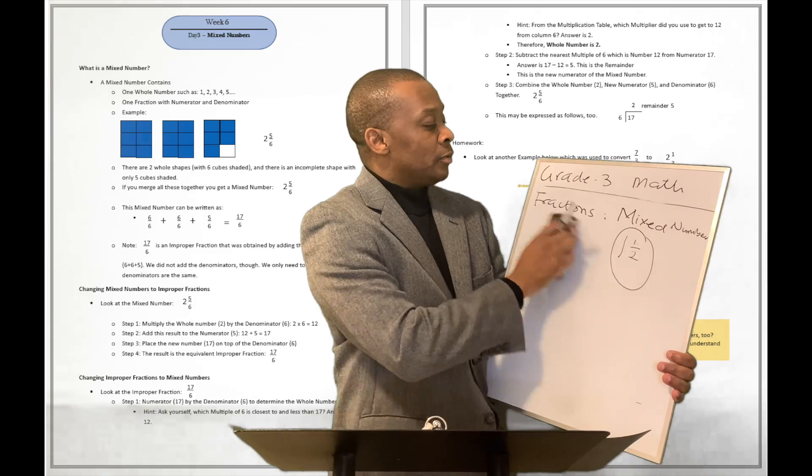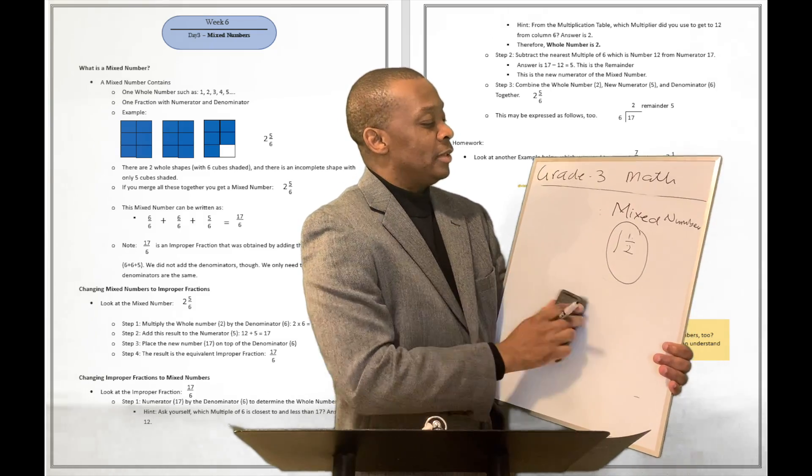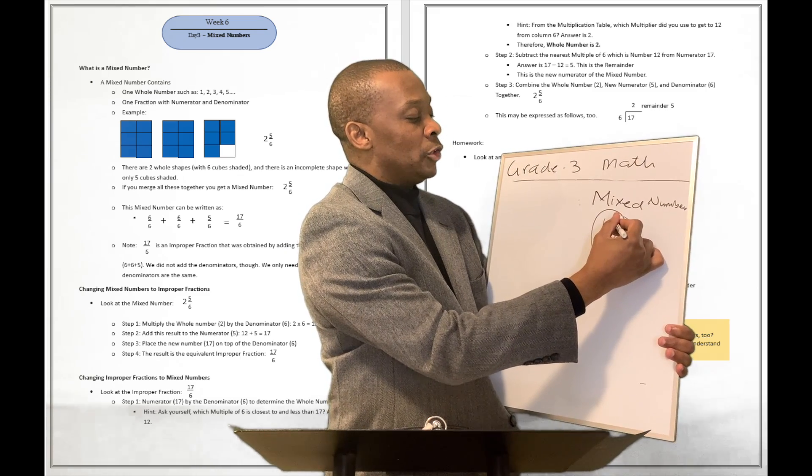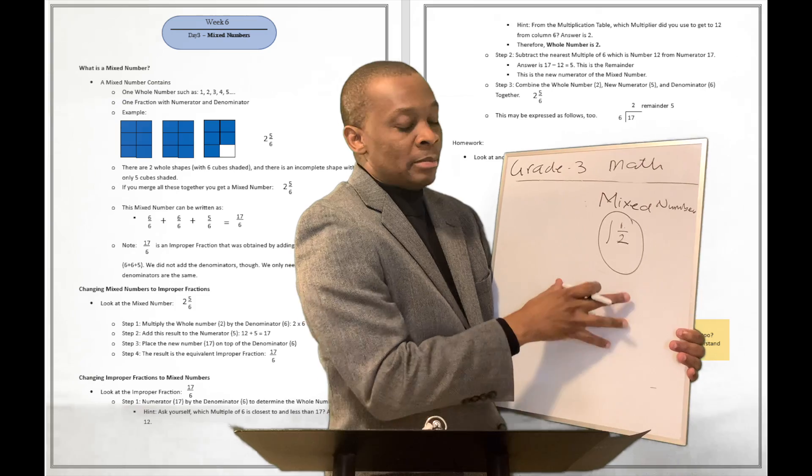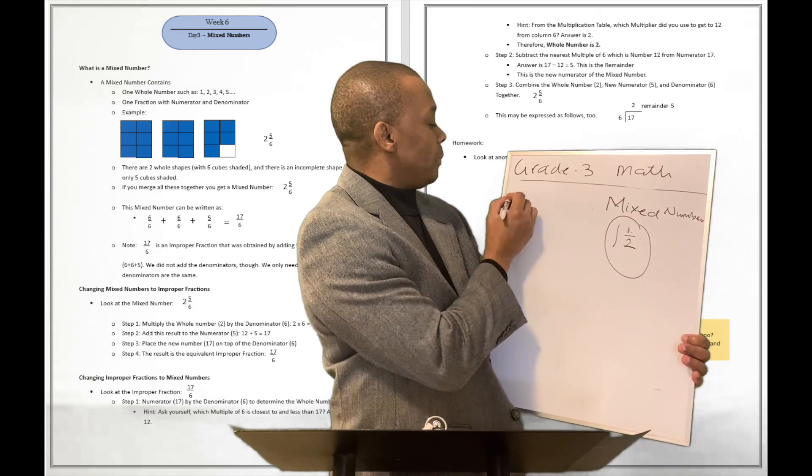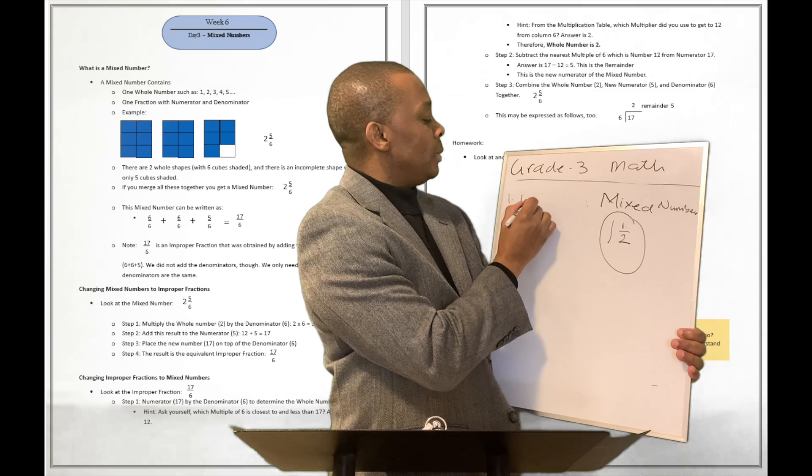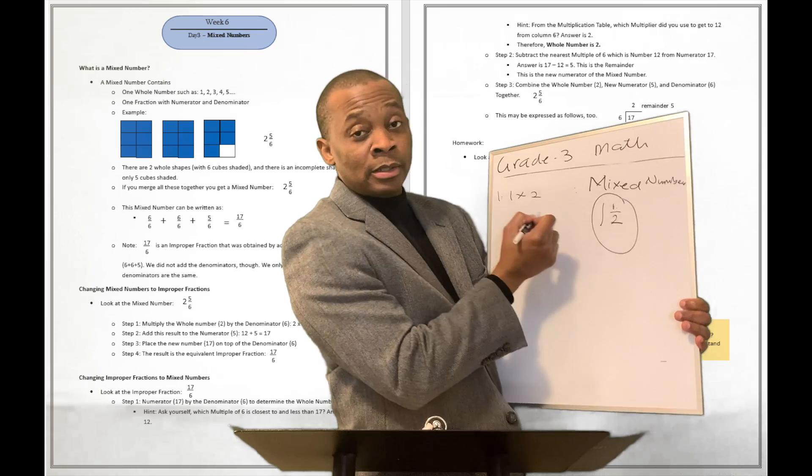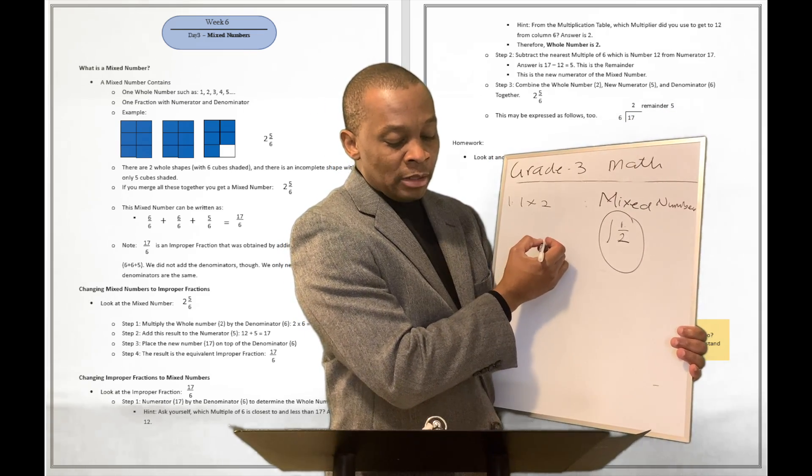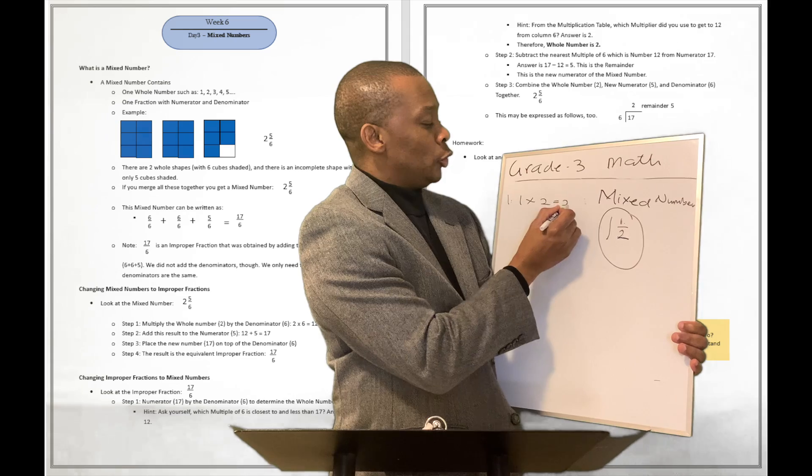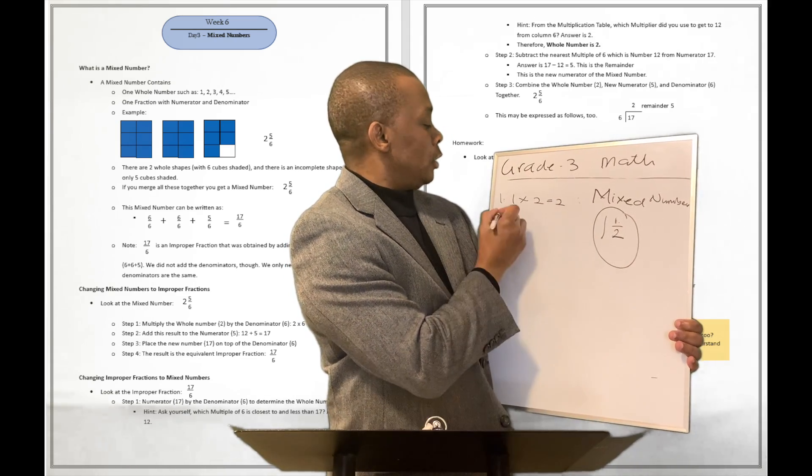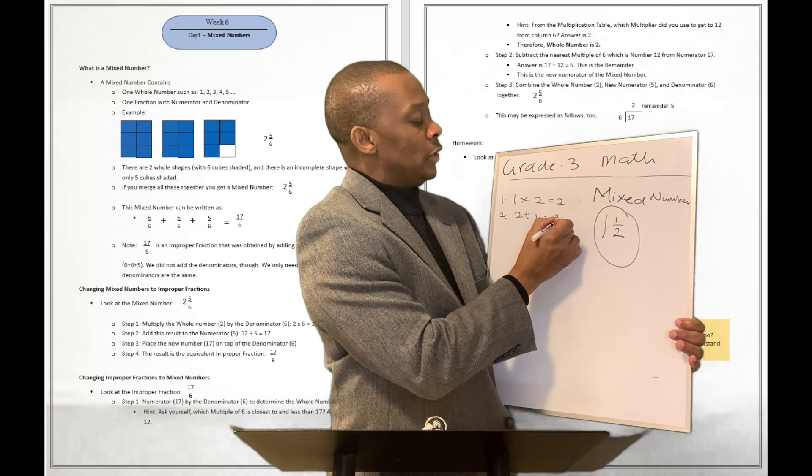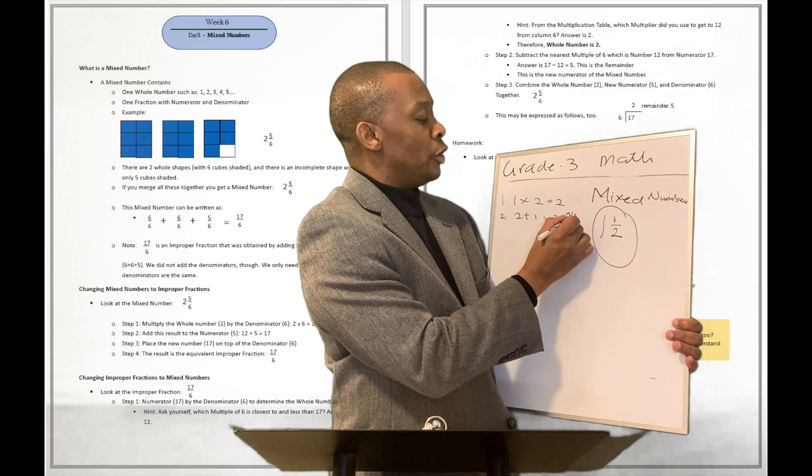So how do we change mixed numbers to improper fractions? Well, we're going to take a look at it real quickly. It is possible. We can do it. Let's do it. So if you want to change this number, this mixed number, to a composite fraction, what you're going to do is step number one. You're going to say one multiplied by two. You're going to say this one, the whole number multiplied by the denominator. And guess what? That's going to give you a two. And then you're going to say, step number two, you're going to say two plus one. And that's going to give you three. This three is the new numerator.